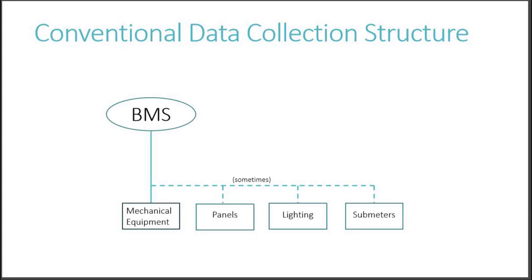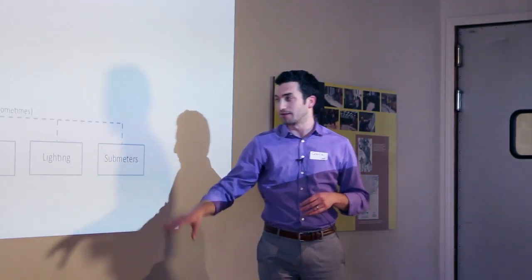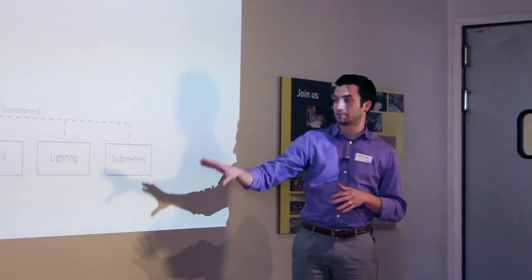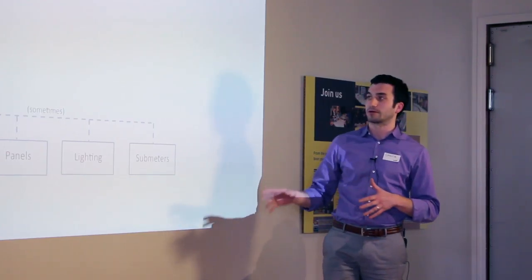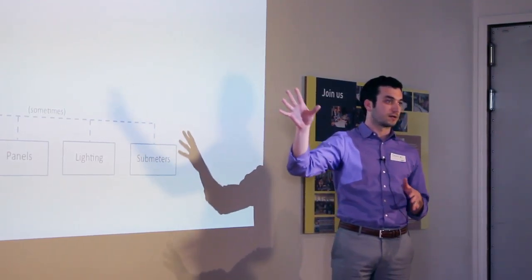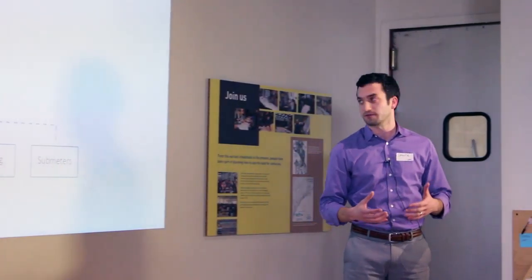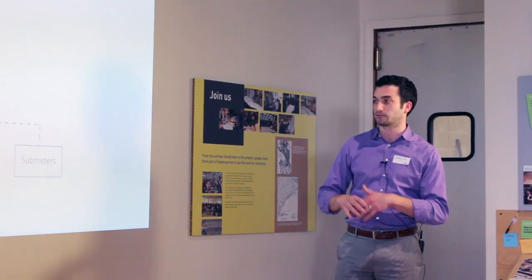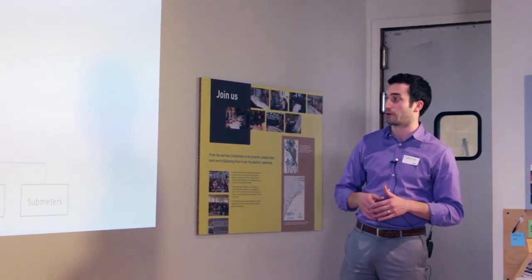In a conventional data collection system, the building management system is there to manage the mechanical system, and occasionally electrical panels, lighting, or submetering gets tied into that. But it tends not to be a particularly user-friendly interface, and it tends not to pull all that information together in an intelligent way.